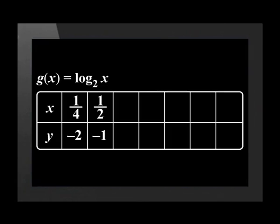We can use the same method to calculate the next few coordinates. These coordinates are (1/2, -1), (1, 0), (2, 1), (4, 2), (8, 3), and (16, 4). Now, let's plot these points on a set of axes.